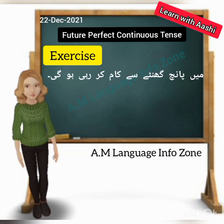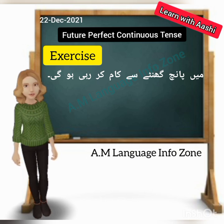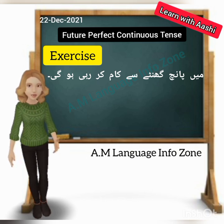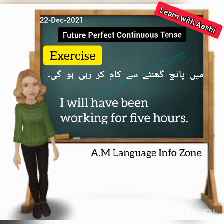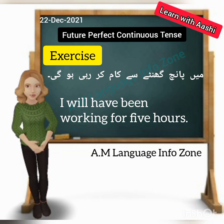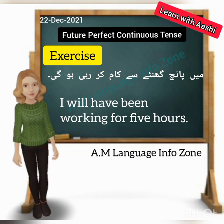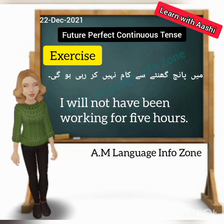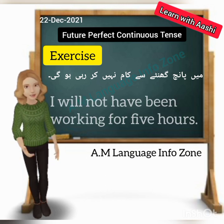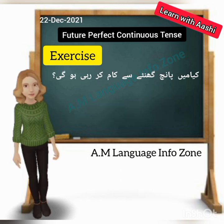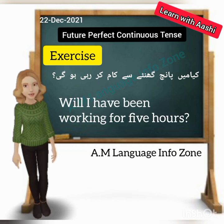Third sentence: 'Main paanch ghante se kaam kar rahi hoongi' — 'I will have been working for five hours.' Here we don't know which five hours — morning, evening, last year — so we use 'for.' Negative: 'I will not have been working for five hours.' Interrogative: 'Will I have been working for five hours?'